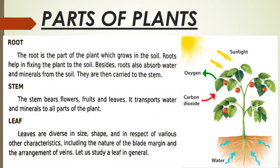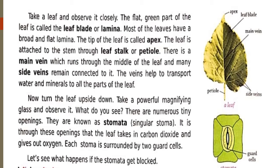Leaves vary in size, shape, and in respect of various other characteristics like the nature of the blade margin and the arrangement of veins. Let us study a leaf in general. Take a leaf and observe it carefully. The flat green part of the leaf is called the leaf blade. You can see in this picture there is a leaf blade, which is also called the lamina.